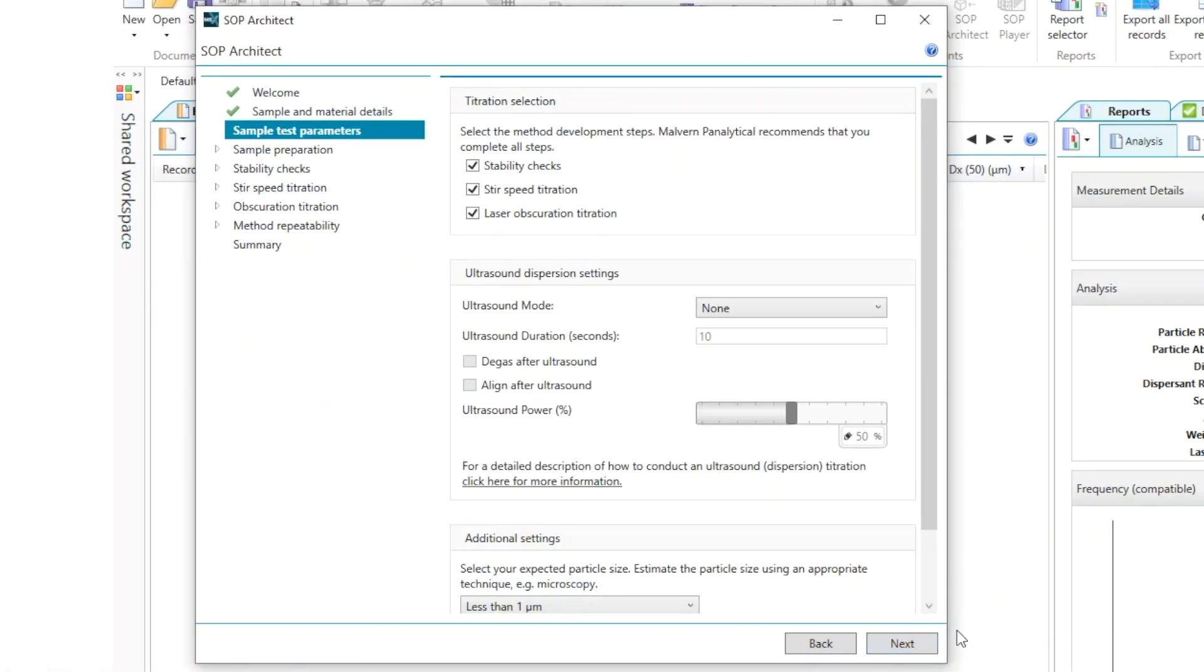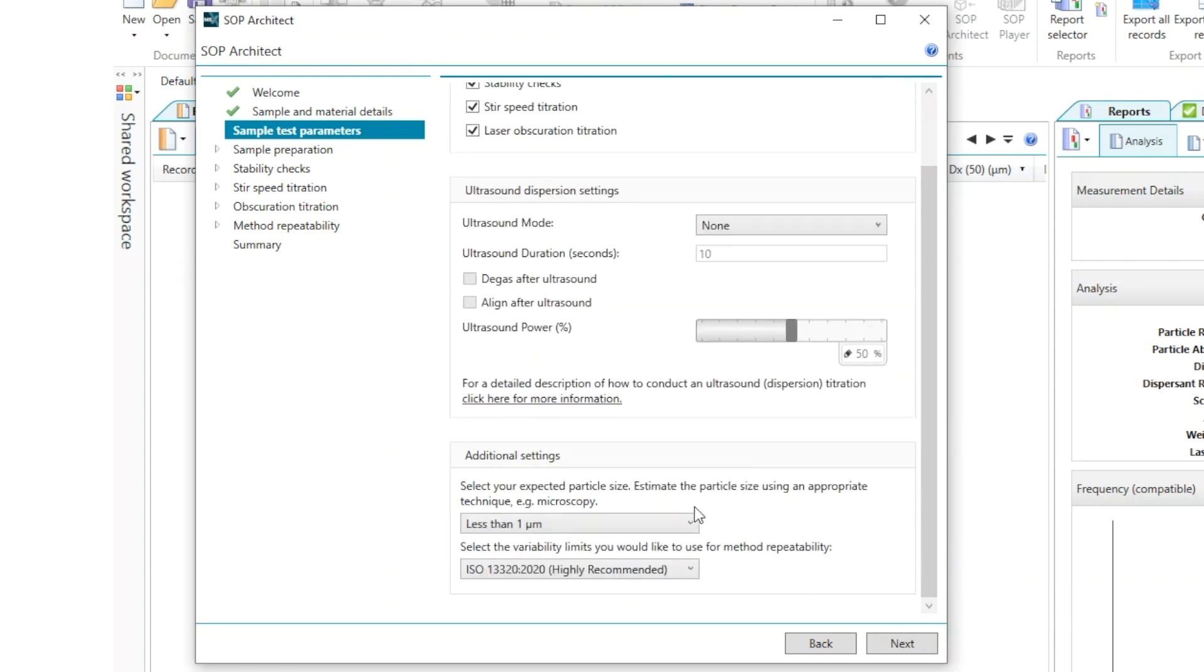From here we can select the method development steps that we would like to carry out. So today we'll first be looking at the stability. I'll be measuring this titanium dioxide sample in water and from there we'll be finding the optimum stir speed and laser obscuration for this sample. At the bottom of this page we also have the option of estimating the particle size that we're going to be measuring and this can help speed up any measurements that we'll be performing.